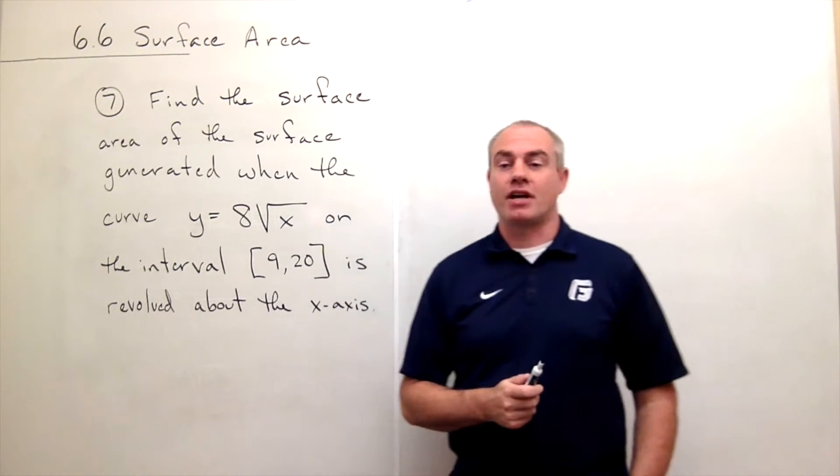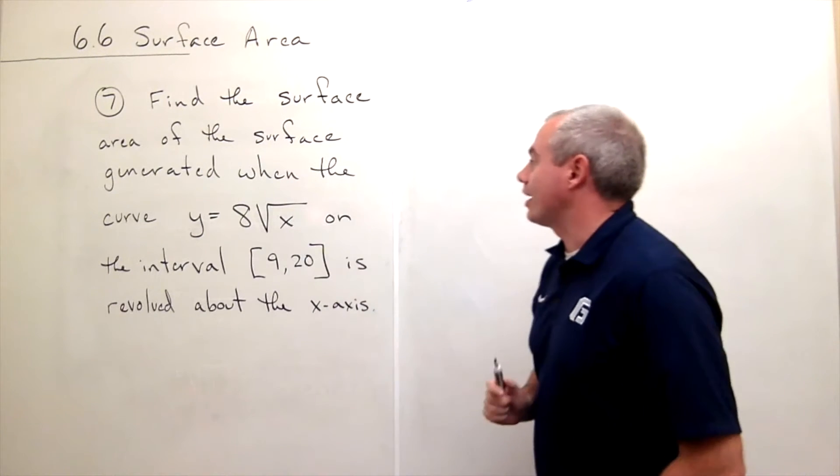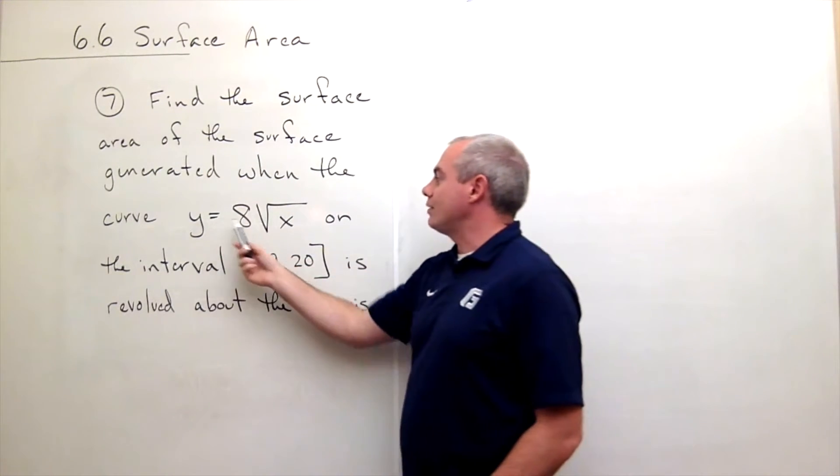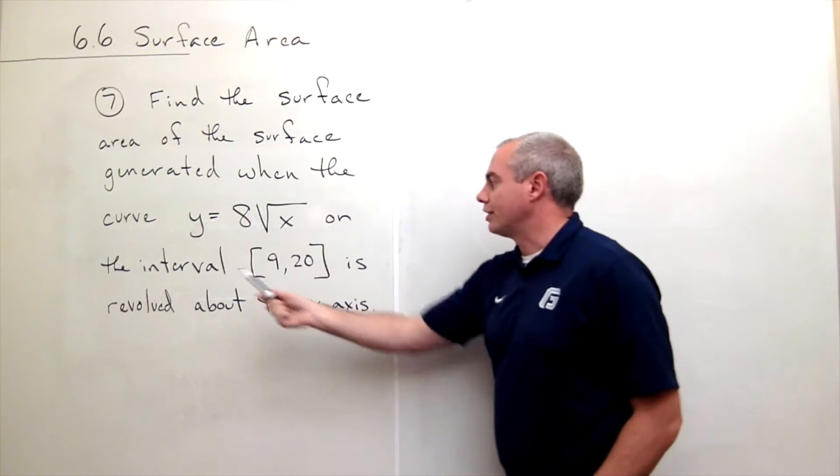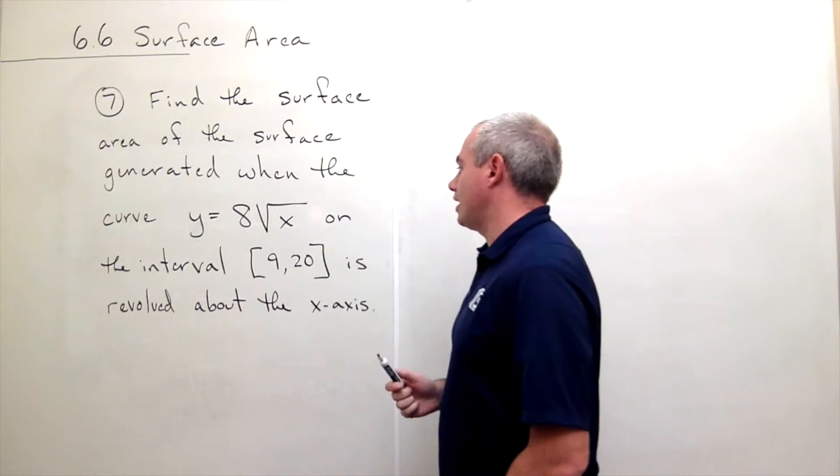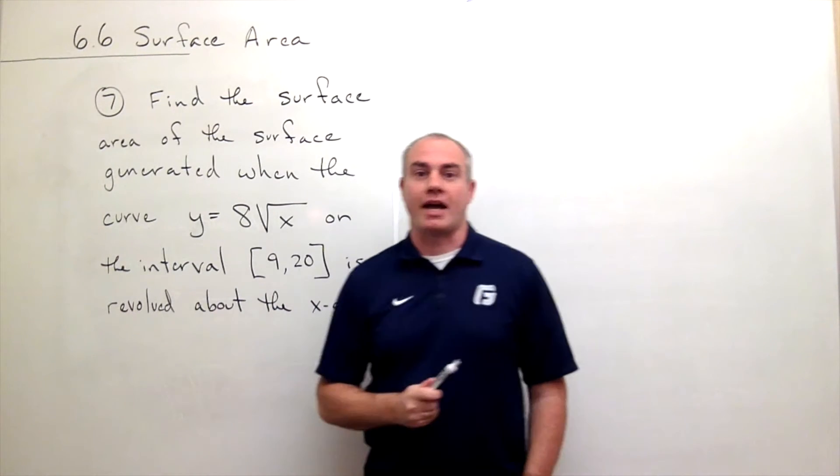The problem asks us to find the surface area of the surface generated when the curve y equals 8 times the square root of x on the interval from 9 to 20 is revolved around the x-axis.